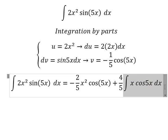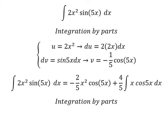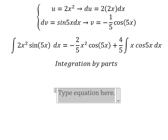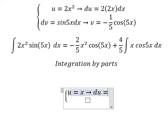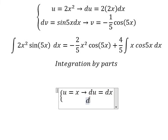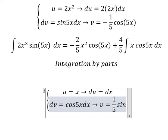Next, we continue using integration by parts for this one. I will put u equals to x. First derivative for both sides, we got du equals to dx. dv, we have cosine 5x dx. The integration of cosine 5x, we have v equals to 1 over 5 sine 5x.